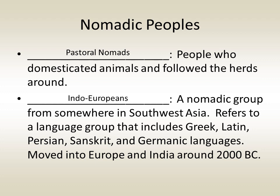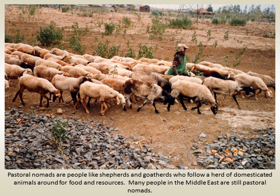Even after the development of systematic agriculture, not everyone switched to farming. Some people became pastoral nomads — people who domesticated animals and then followed those herds around for food and resources, like shepherds and goat herders. One important group of pastoral nomads were the Indo-Europeans, a nomadic group from southwestern Asia. Many people in the Middle East and across the world are still pastoral nomads even today.